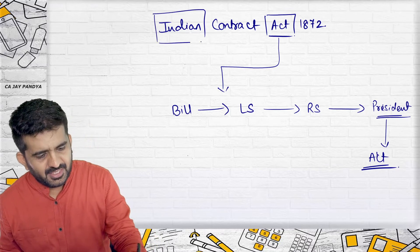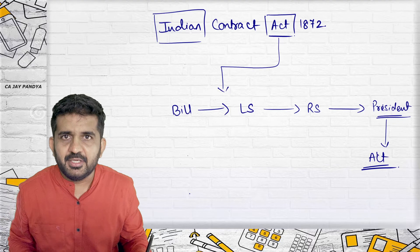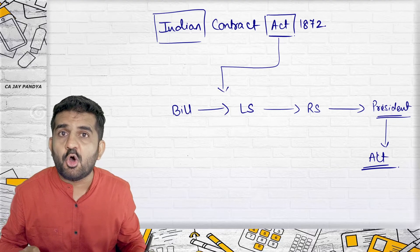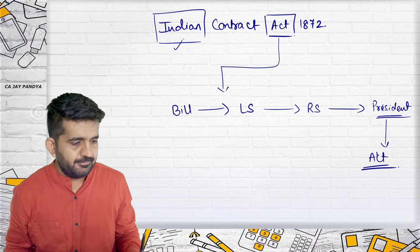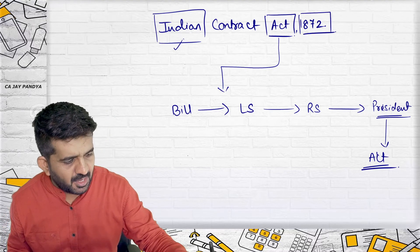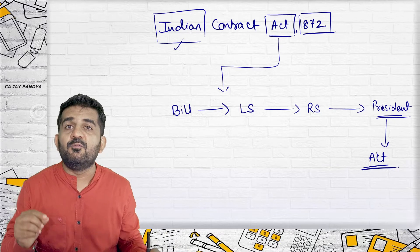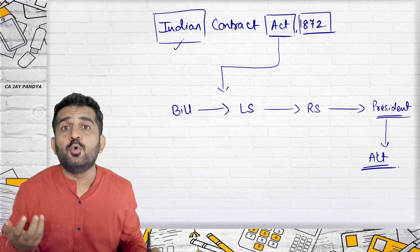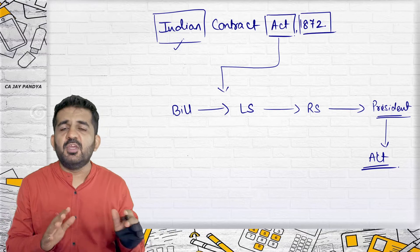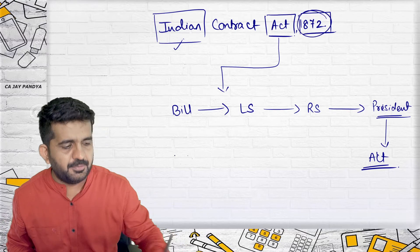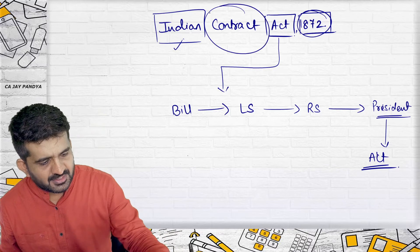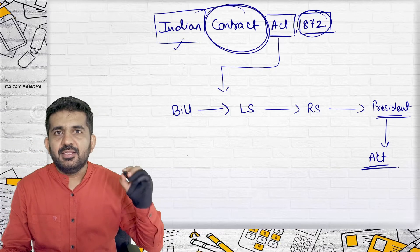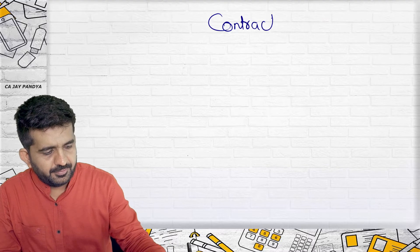The Indian Contract Act was originally an English contract act, but we passed it in the Indian Parliament — passed in Lok Sabha, passed in Rajya Sabha, signed by the President — and changed the name from English to Indian. The English people passed it in 1872, and since we don't want to take undue credit, we kept the date 1872. The law is regarding contract, and in this lecture we are going to commence what is contract.